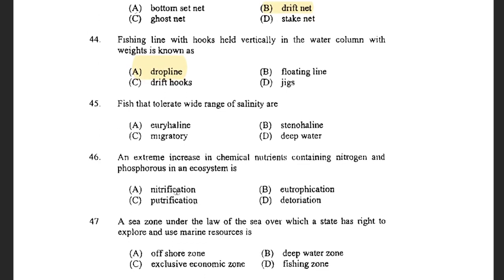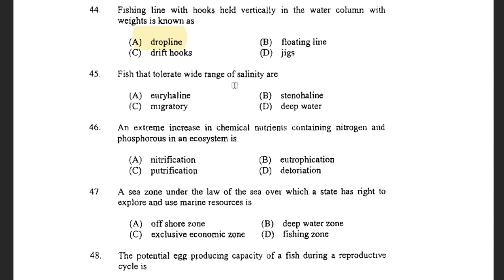Next question: Fishes that tolerate a wide range of salinity are — options are Euryhaline, Stenohaline, Migratory, and Deep water. The answer given is Stenohaline. Note: Euryhaline fishes tolerate a wide range of salinity, while Stenohaline fishes tolerate a narrow range of salinity.